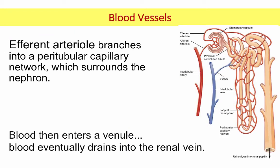It's not urine quite yet, but that filtrate trickles into the proximal convoluted tubule. The efferent arteriole branches to become the peritubular capillary network — peri means around, around the tubes, and they are capillaries. Sometimes these are shown as true capillary beds with blue and red; other times they're not. That blood enters venules which transition into veins and eventually ends up in the renal vein.